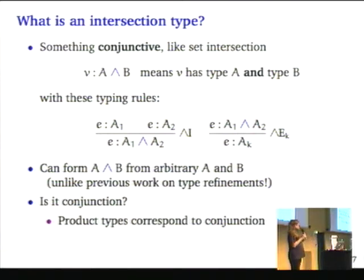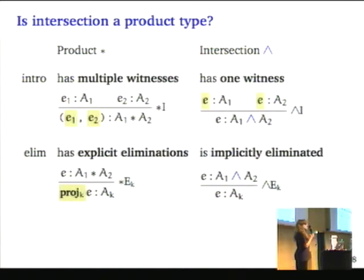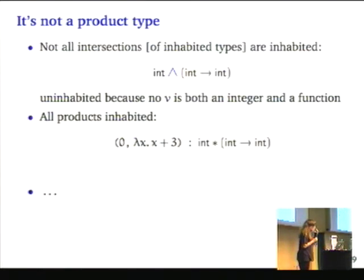Is it just conjunction? Well, it seems unlikely because we know that product types correspond via Curry-Howard to conjunction, and intersection is not really a product type. Product is something that has multiple witnesses - you get to give one witness for A1 and another one for A2. Intersection has only one witness, so you need to give one term that has both type A1 and type A2. In the elimination, you have to explicitly project out of a product, but you don't explicitly project out of the intersection. It's really not a product type because not all intersections of inhabited types are inhabited. There is no v that is both the integer and a function, but of course all products are inhabited.